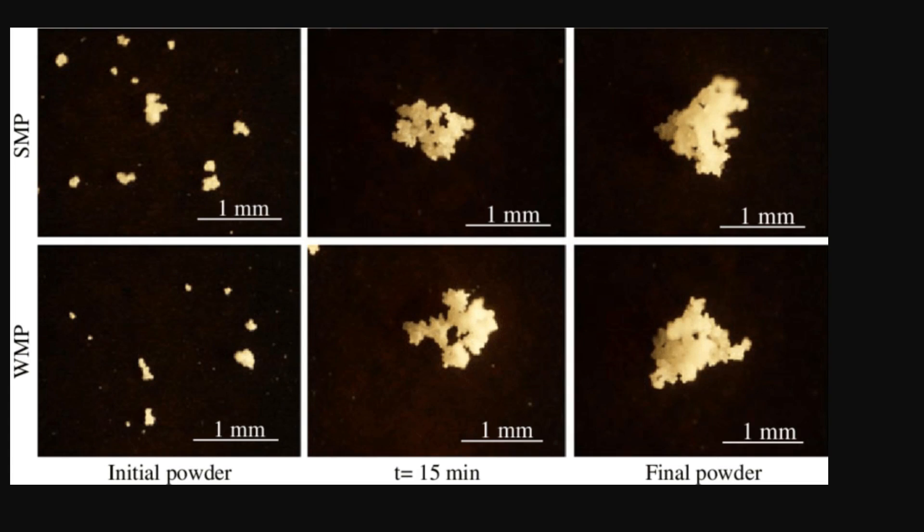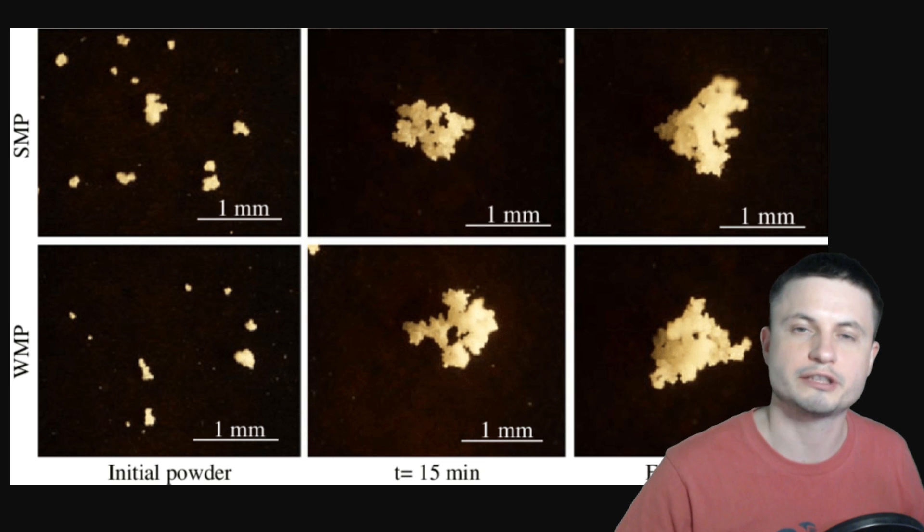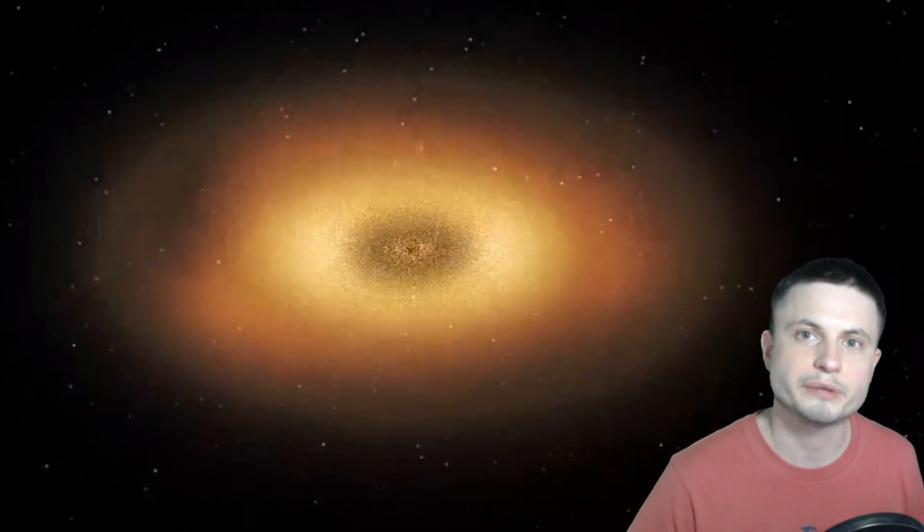But even though we kind of understand how smaller particles form, because basically if you were to take two small tiny particles that are about a millimeter in size and bring them close together they would actually stick. This is sort of how dust bunnies form around your house. If you don't clean for a few weeks you'll have these formations where particles just stick together. And we believe something similar is responsible for creating larger pieces in protoplanetary disks.